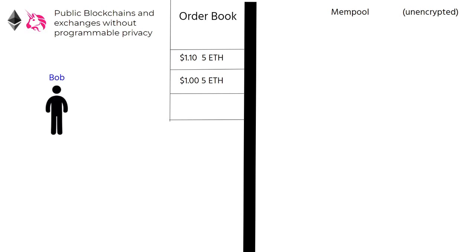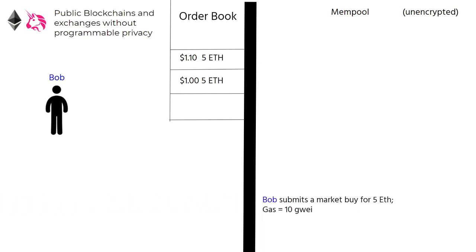Meet Bob. He is a Uniswap user that wants to purchase 5 ETH from the orderbook. Bob submits a market buy for 5 ETH, using 10 Gwei as the gas price. Note that Bob's purchase will not be made until a block producer includes his transaction.